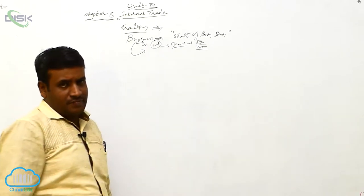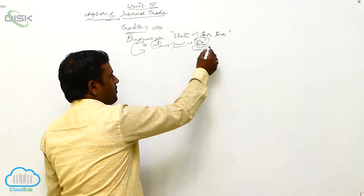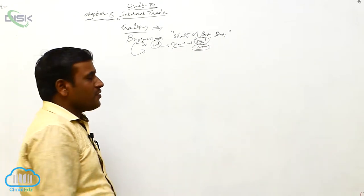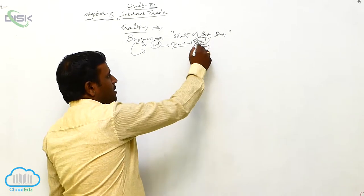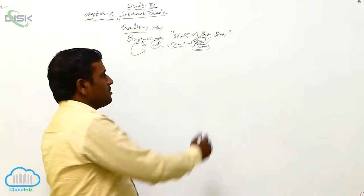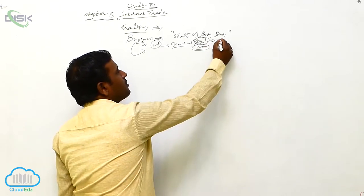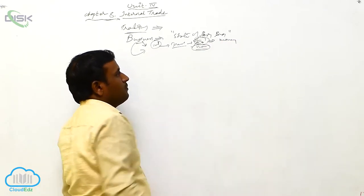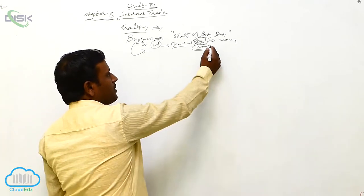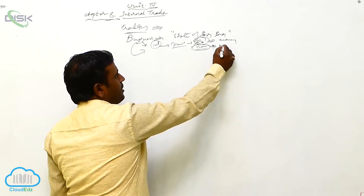Business should be started whether economic activities or non-economic activities will be there. These are human activities. Human activities are two types: economic activities and non-economic activities. Economic activities means involvement with money, whereas non-economic activities means there is no involvement of money.